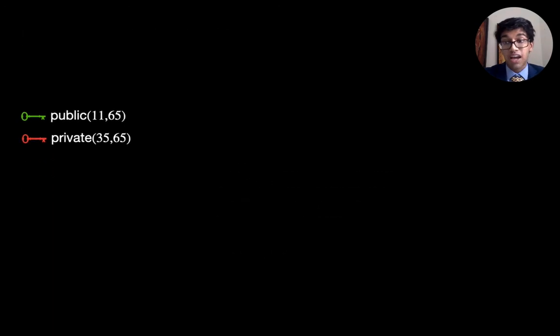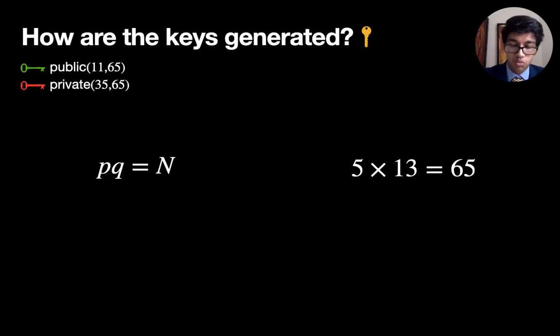You might be wondering how we actually derive these keys in the first place. Well, a common divisor is found by multiplying two prime numbers together. So here I've done five times 13, which gives 65. In reality, these prime numbers would normally be huge. I'm talking hundreds, thousands of digits long. And so even though multiplying them together is relatively straightforward, there's no simple, efficient way of factorizing it. So even though we publish n 65 to the rest of the world, it's infeasible to calculate p and q.